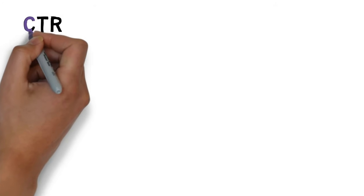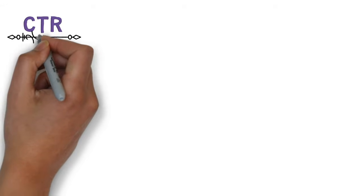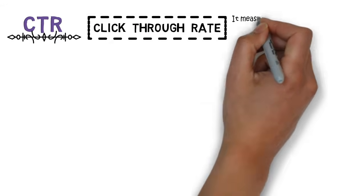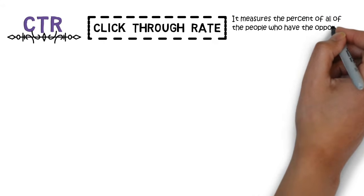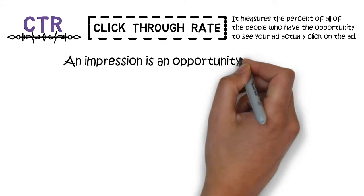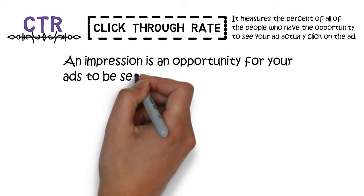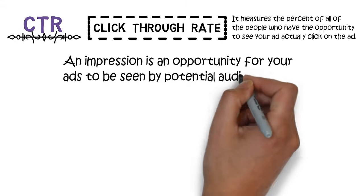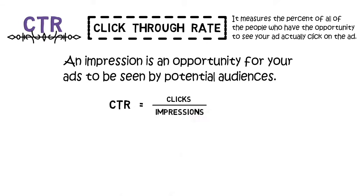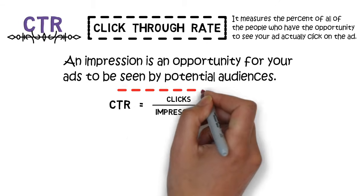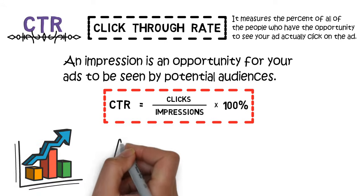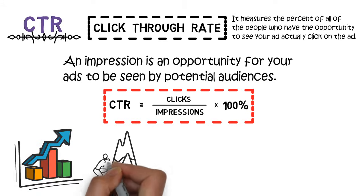Click-through rates, CTRs. As told by the name, it measures the percent of all of the people who have the opportunity to see your ads that actually click on the ads. Remember, an impression is an opportunity for your ad to be seen by the potential audiences. CTR is calculated as clicks divided by impressions, then times 100%. For this metric, the higher the better — a higher CTR means better engagement of your ads with the audiences.